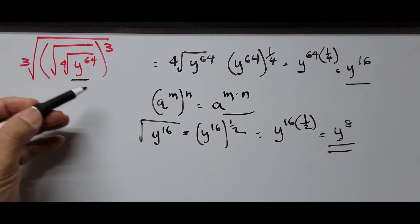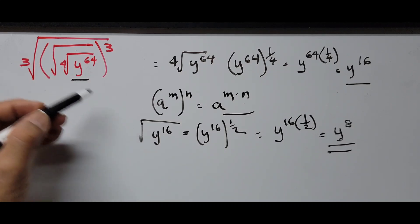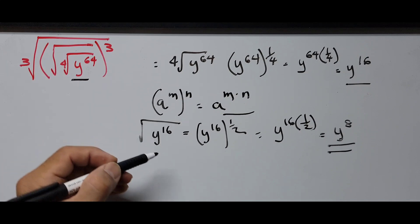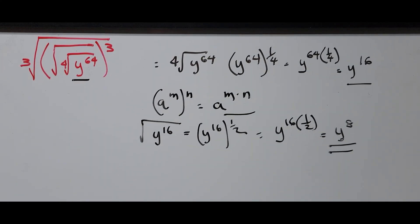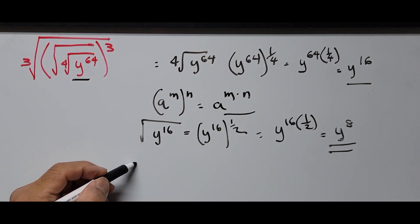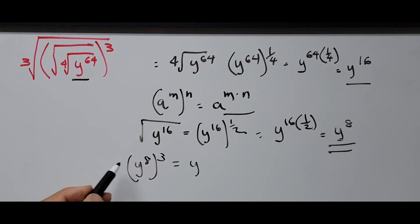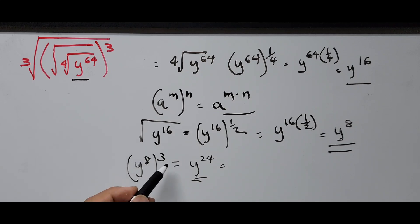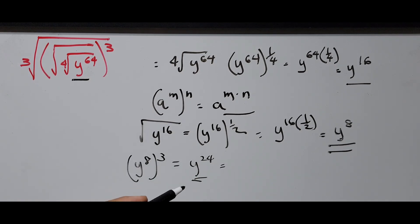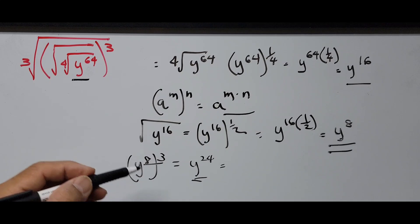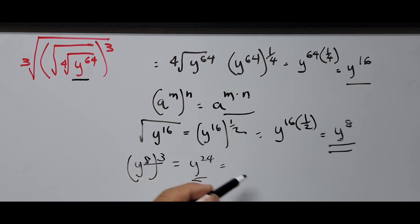Next, we have to raise that to the third power since we're done with the square root. So we raise y to the 8th to the third power. That is y to the 8th raised to the third power, which equals y raised to 8 times 3, which is 24. We just leave it as y to the 8th raised to the third power for now.